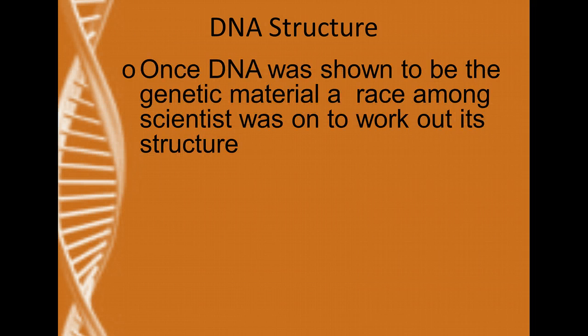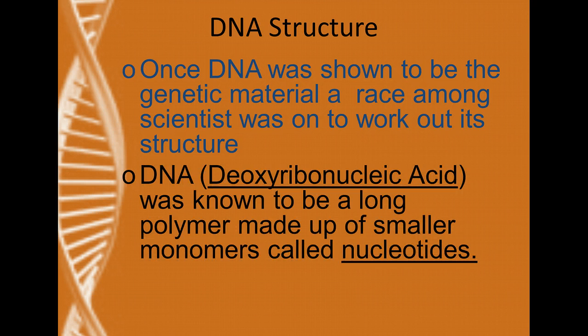Once DNA was shown to be the genetic material, there was a race among scientists to work out its final structure. DNA, also known as deoxyribonucleic acid, was known to be a polymer — a long polymer — made up of building blocks called nucleotides.